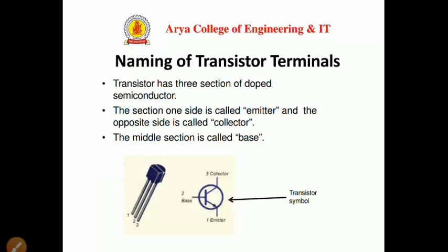The three terminals are: emitter, base, and collector. These are the three terminals in a transistor, and it looks like this in a physical or practical way.